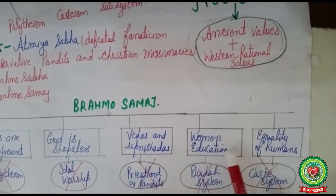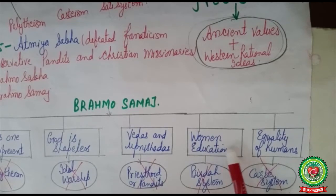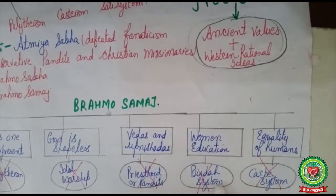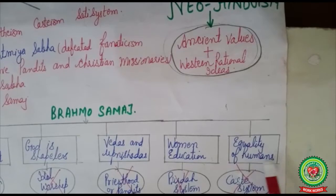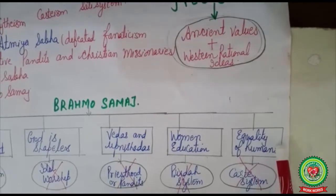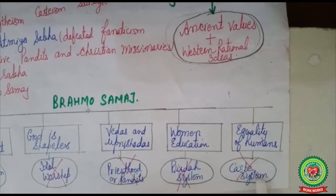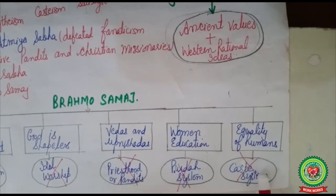He was in favor of women's education and believed women have equal rights as men to get education and develop in society. He denounced the purdah system prevalent at that time. He believed all human beings are equal — God created them equal and we should treat them equal. By saying this, he discarded the caste system, which believed in high and low caste people, and indirectly he discarded untouchability which was going on in Indian society at that time.